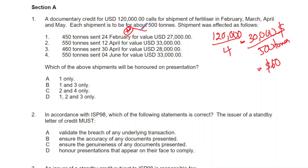The use of the word 'about' has been used in terms of quantity, which lets you have a plus or minus 10% tolerance. This 10% tolerance is only available either for the amount of the LC, the unit price, or the quantity for which the word 'about' has been used. Here 'about' has been used for quantity only, so the 10% tolerance applies for quantity only and the unit price ideally cannot change. About 500 tons means 450 to 550 tons is acceptable.